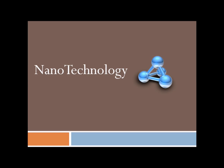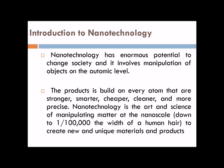Let us talk about nanotechnology today. Nanotechnology has enormous potential to change society as we are seeing it now, and it involves manipulation of objects on the atomic level. The size does matter and the product is built on every atom — every atom that is stronger, smarter, cheaper, cleaner and more precise. Nanotechnology is actually an art and science of manipulating matter at the nanoscale, down to one hundred-thousandth the width of a human hair, to create new and unique materials and products.